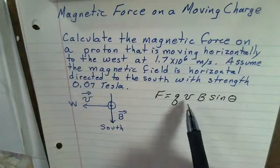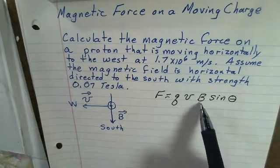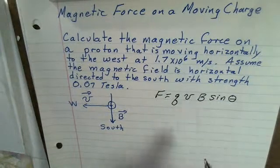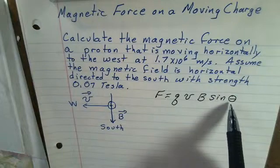The charge, the velocity in meters per second, the magnetic field in teslas, and then we have to account for a factor. The sine of the angle, theta is the angle between the velocity vector and the magnetic field vector.